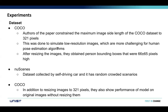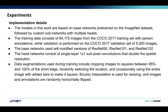They also use a new scene dataset that was collected by self-driving cars, which includes several crowded scenarios. When they resize the images in the COCO dataset, they train other models on those and get the performance. The model in this work is based on a base network pre-trained on ImageNet, followed by custom sub-networks with multiple heads. The training dataset consists of 64,000 COCO images with person annotations, and they use the COCO validation set.